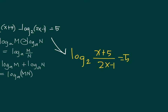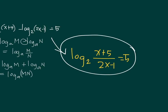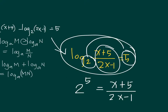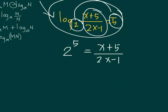We now convert to exponential form: the base 2 raised to 5 equals (x+5)/(2x-1). Since 2 to the 5th equals 32, we have 32 = (x+5)/(2x-1).